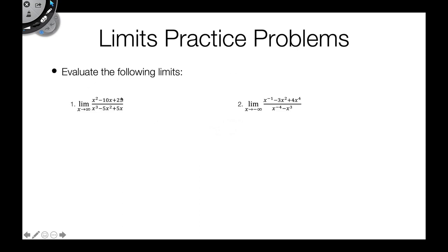Here's our first example. We have x squared minus 10x plus 25 over x cubed minus 5x squared plus 5x. The first thing we do with these kinds of questions is divide by the highest power in the denominator — that's going to be x cubed. So we're going to divide everything in this expression by x cubed.